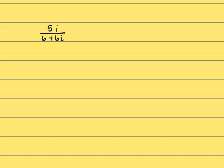We were asked to find the quotient. Another way to say that is they want us to rationalize this problem, and that means get the i out of the denominator. You never want to leave an i in the denominator. So what you do is you multiply by the conjugate, and the conjugate looks just like the denominator except the middle sign is always the opposite.